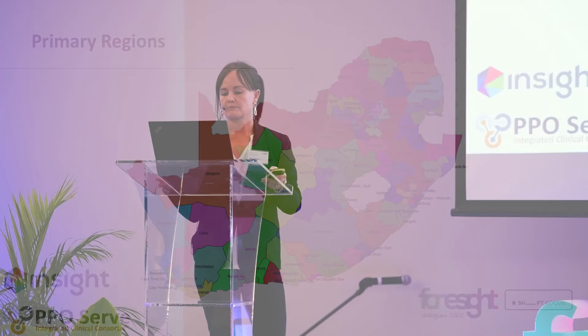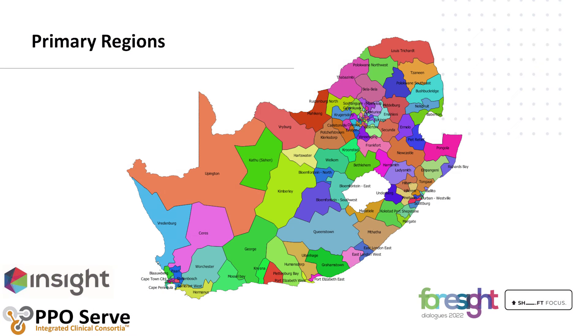These secondary levels of care can in turn be divided into primary regions, which are defined as areas where members access primary healthcare services. As the level of care declines or supply of providers increases, the regions become smaller and more plentiful.